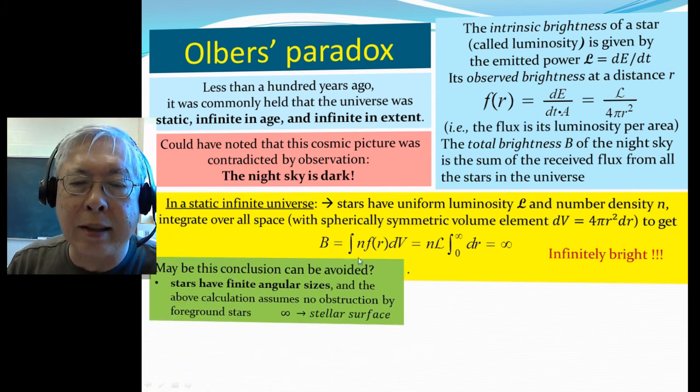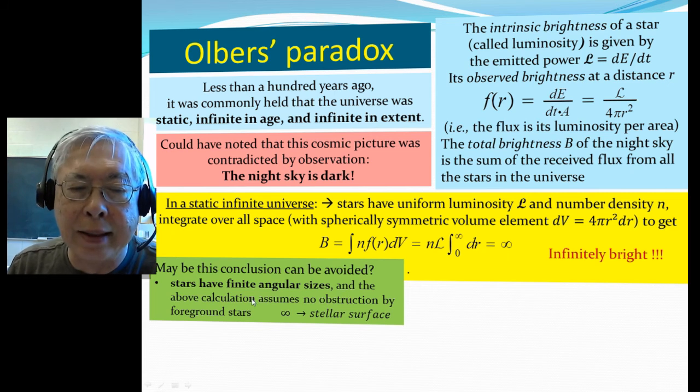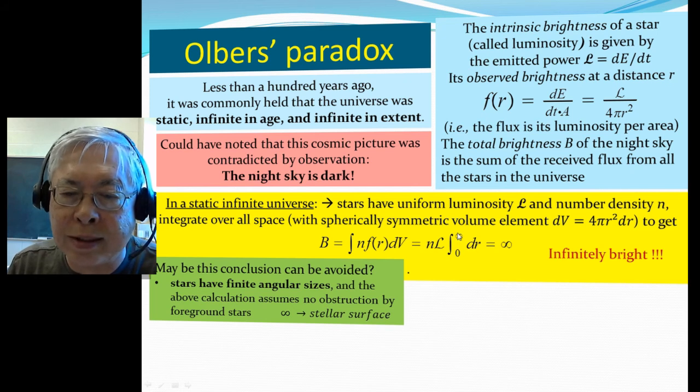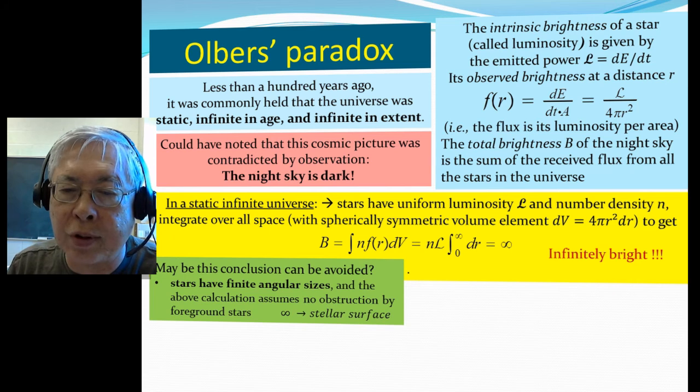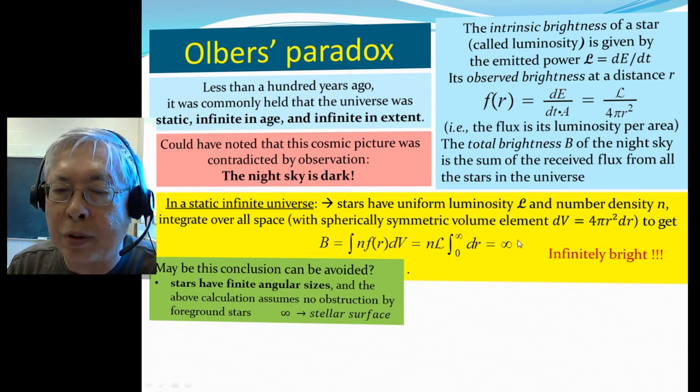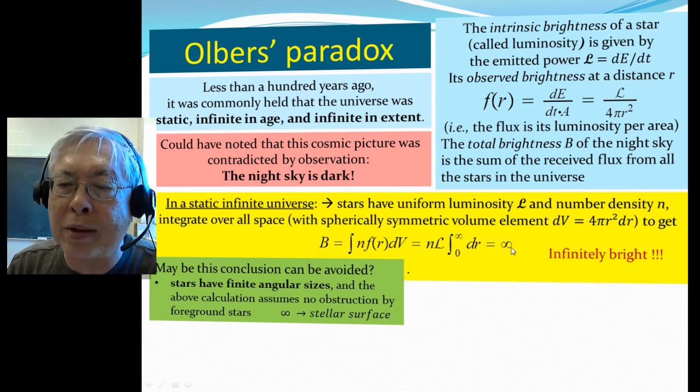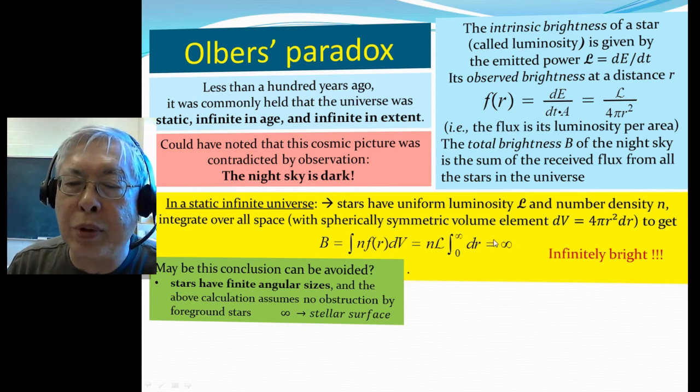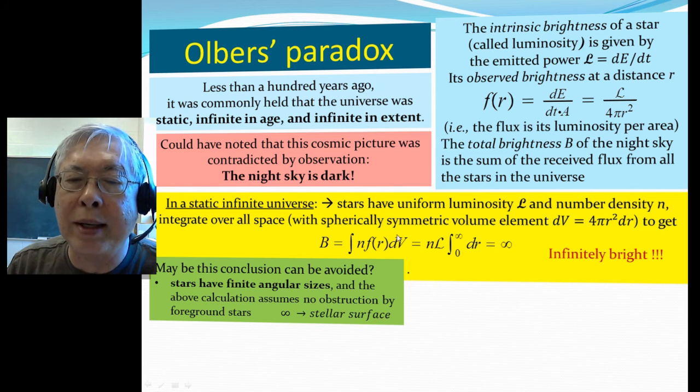Now, that's an over-conclusion, because stars have finite angular sizes, and the above calculation assumes no obstruction by foreground stars. So really, instead of infinity, we should really integrate to the distance to the surface of the star. So therefore, instead of infinite, this really, the brightness should be the surface brightness of stars. So anyways, this calculation really should be like the total brightness is like every direction you look is like looking direct into the sun.